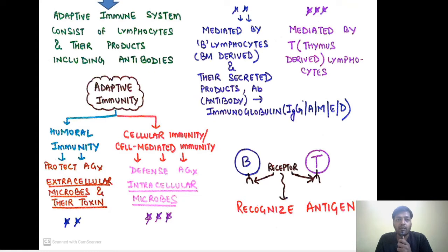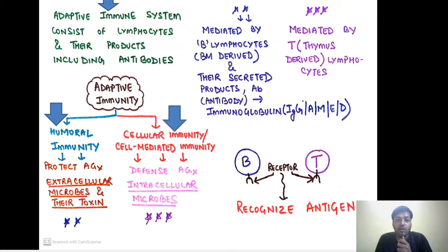The adaptive immune system consists of lymphocytes and their products, including antibodies. Adaptive immunity can be divided into two types: humoral immunity, which provides protection against extracellular microbes and their toxins, and cellular immunity, or cell-mediated immunity, which provides defense against intracellular microbes. It is very important to remember this distinction.